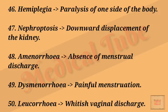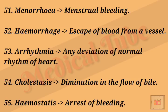Number forty-eight: amenorrhea means absence of menstrual discharge. Number forty-nine: menorrhagia means excessive menstrual bleeding. Number fifty: leukorrhea means white vaginal discharge. Number fifty-one: menorrhea means menstrual bleeding.